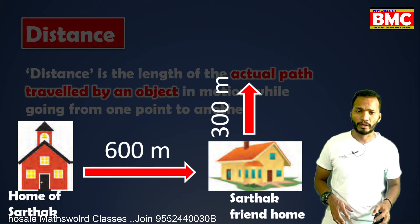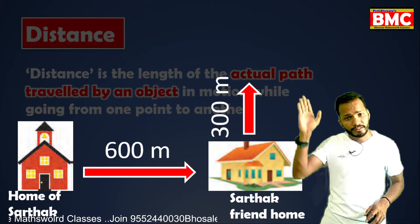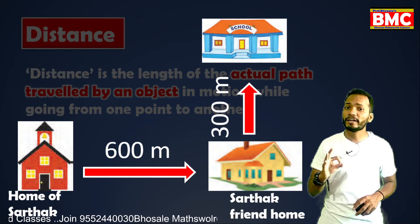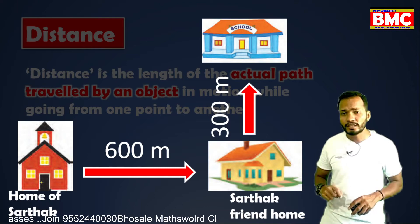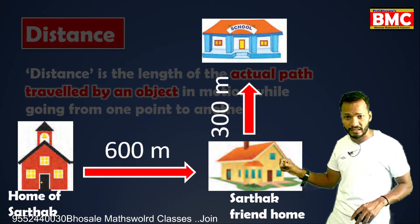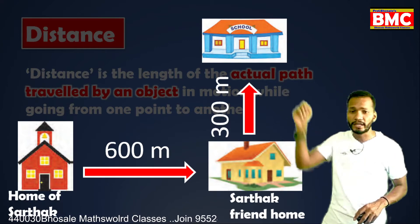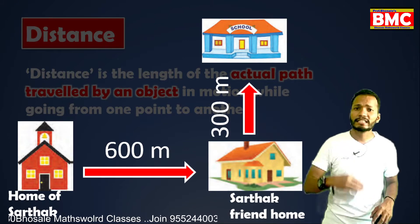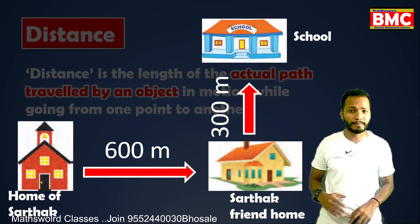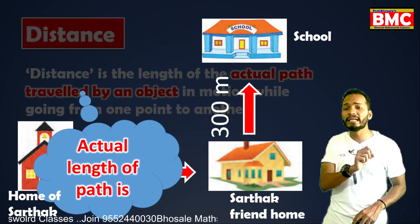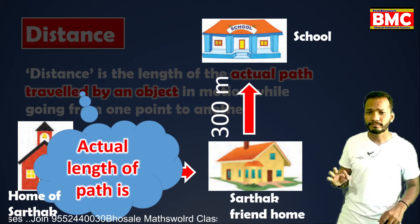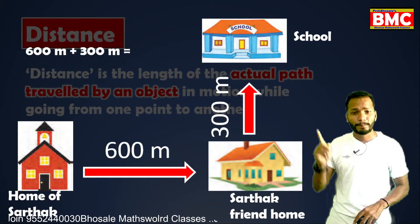The school is 300 meters away. Now, Sartak leaves his home, goes to his friend's place, and then goes to school. So how much actual path distance does Sartak cover? The actual length of the path he takes is 600 meters plus 300 meters.